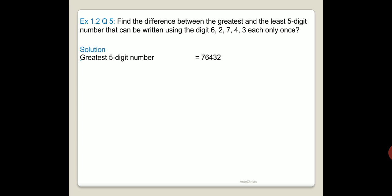So similarly, what will be the least 5-digit number from these digits? It is from the smallest number to the largest number. So now we got the two numbers.